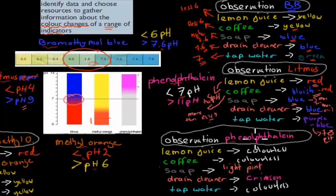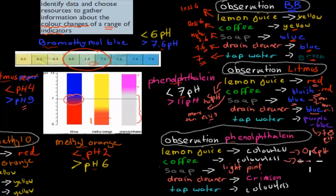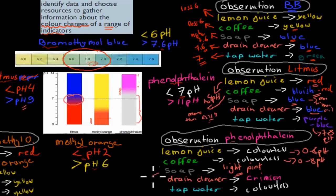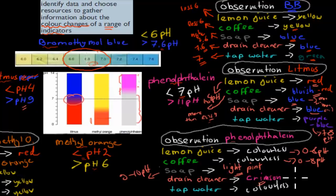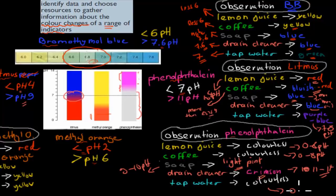Then we do the same thing again using phenolphthalein. Lemon juice turned colorless, covering the range of about 0 to 8, so lemon juice would have a pH anywhere between 0 and 8. Coffee would also be colorless, so it also has a range of 0 to 8. Soap was light pink, which is around a pH of 9 to 10. The drain cleaner turned crimson — deep pink — which puts it somewhere in the range of 11 to 14. Tap water was colorless, so using this indicator it's somewhere between 0 and 8.